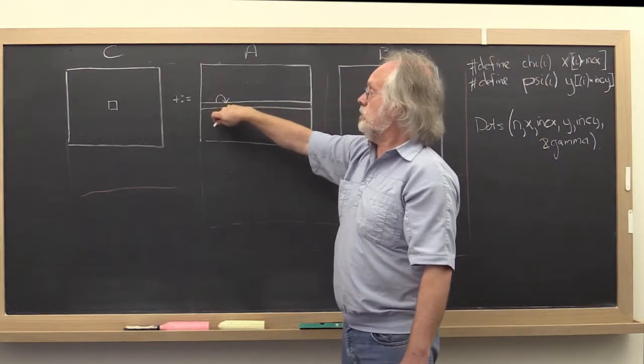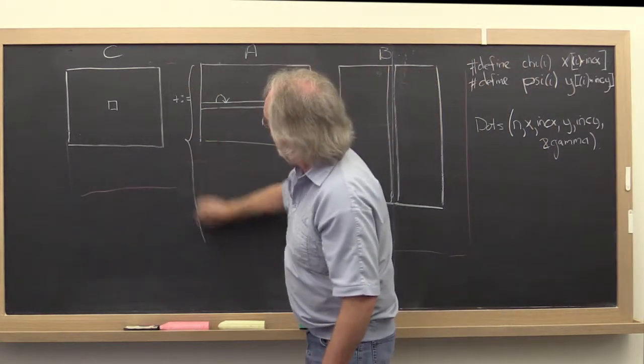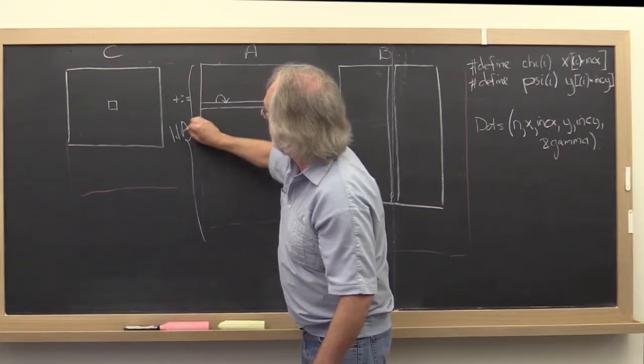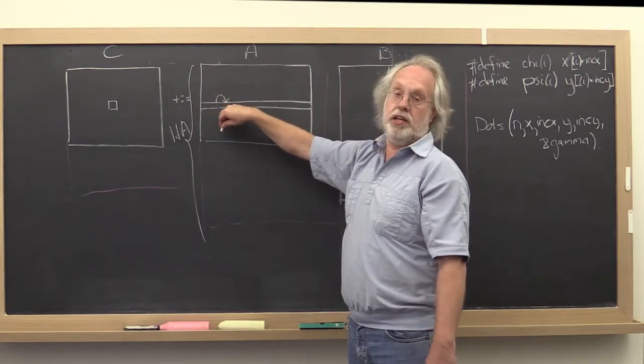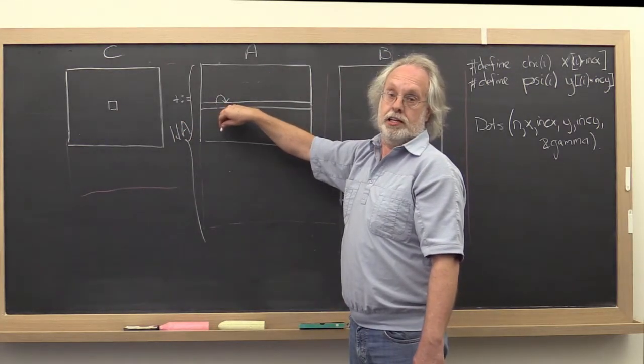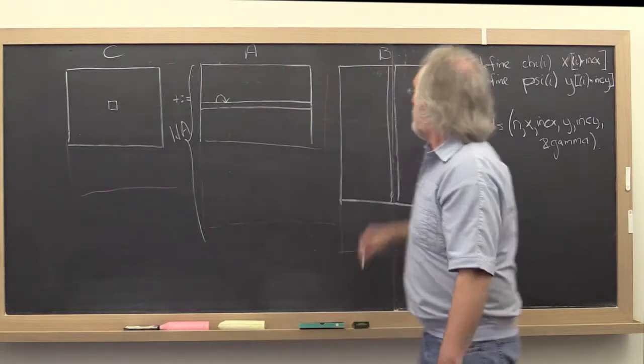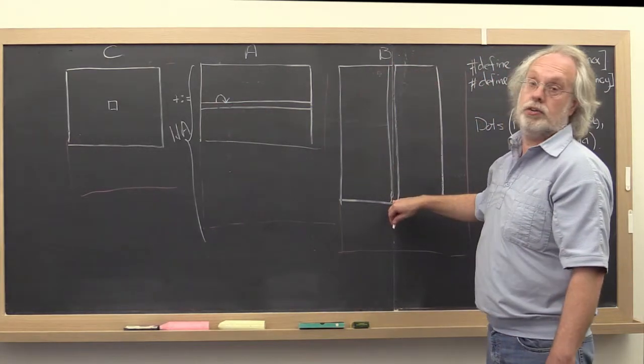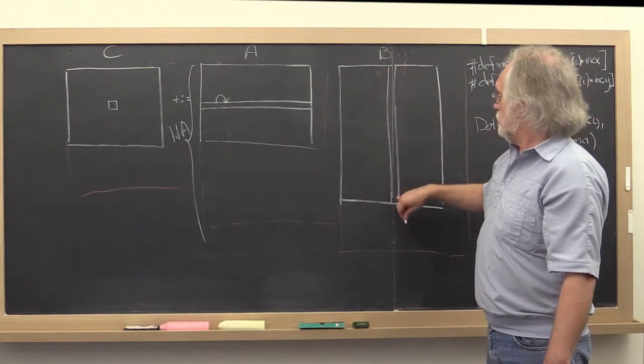Here the increment would be the leading dimension of A because that tells you by how many items you have to march through memory. And here, because we're going down the column, the increment would just be one.